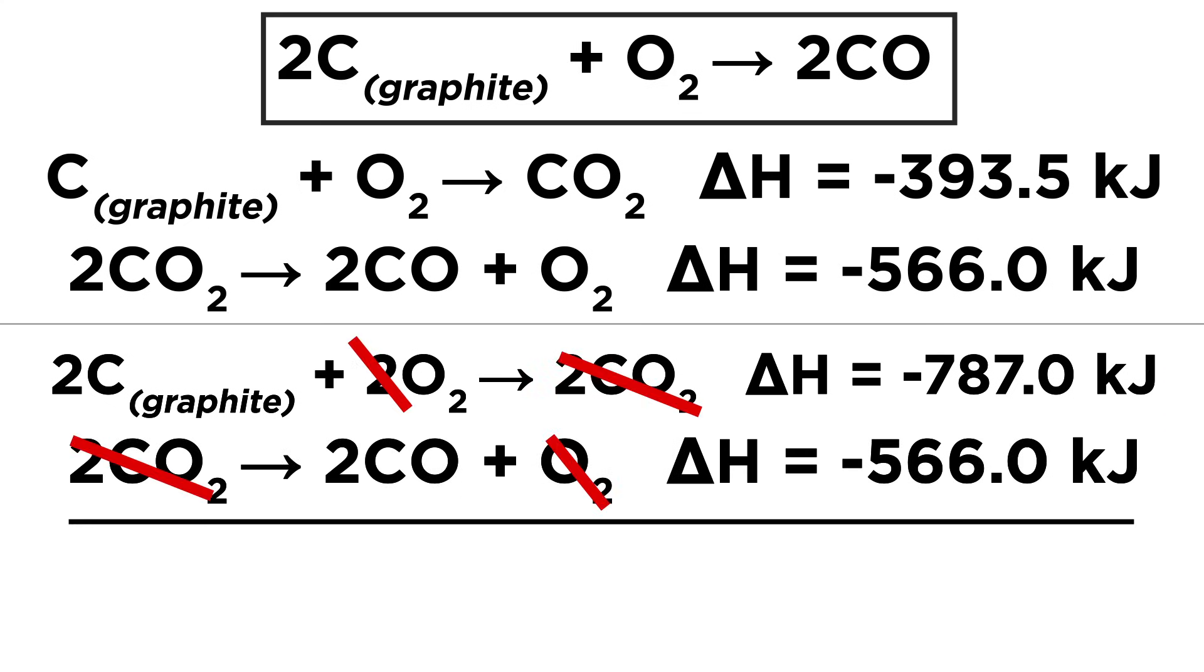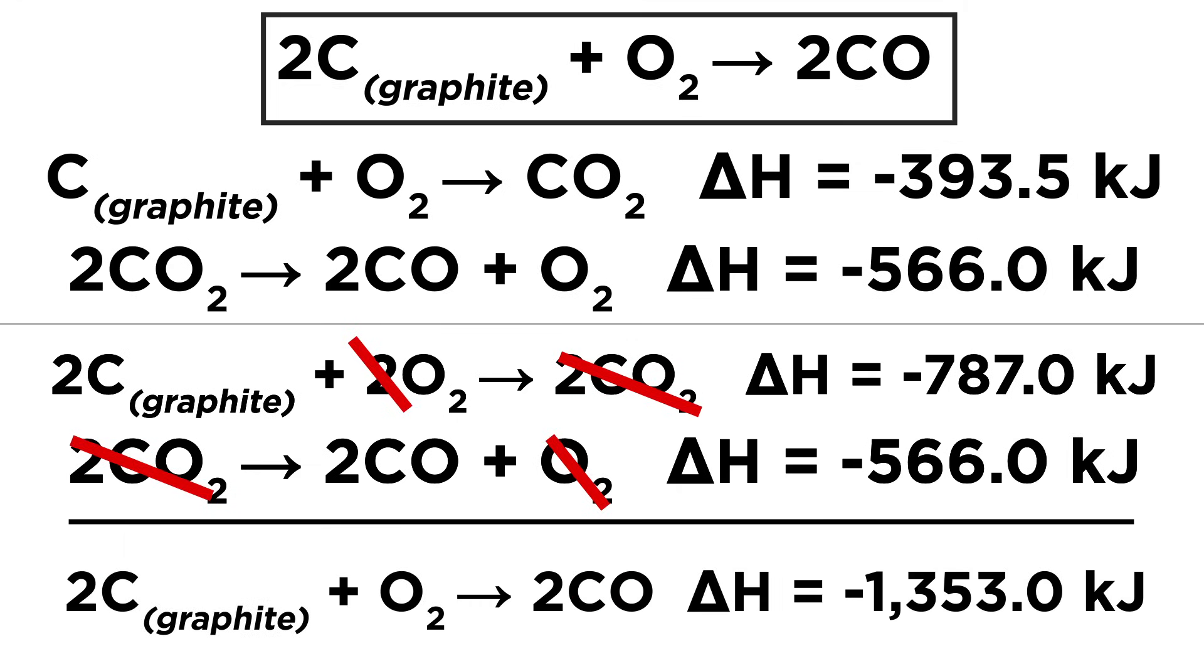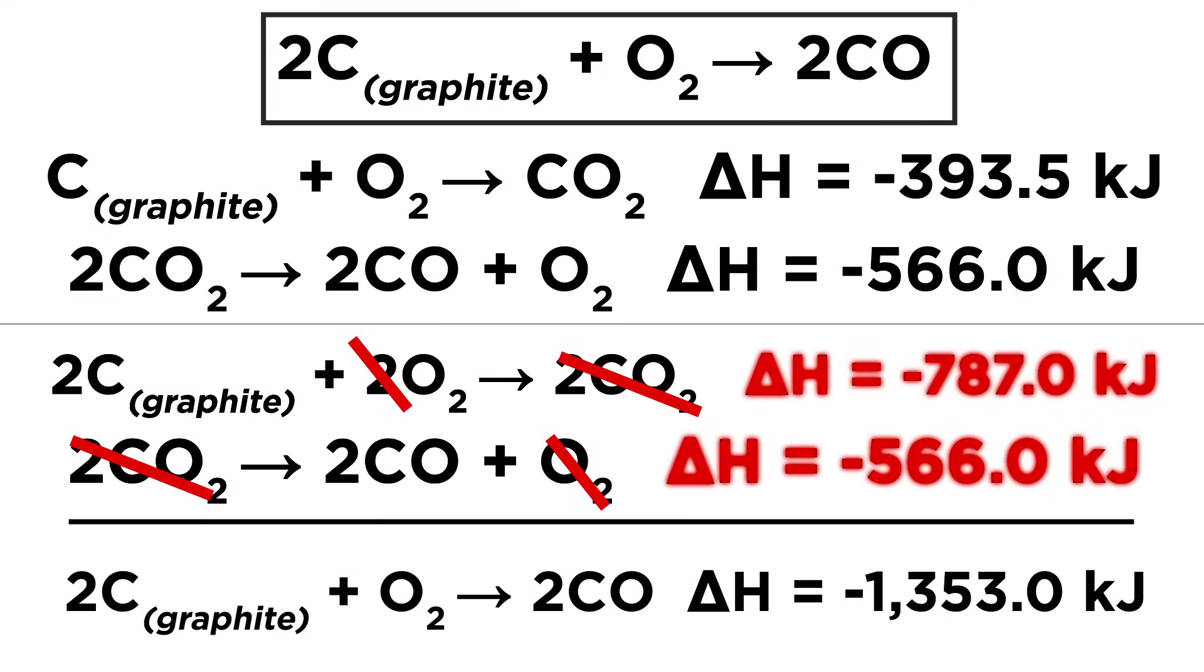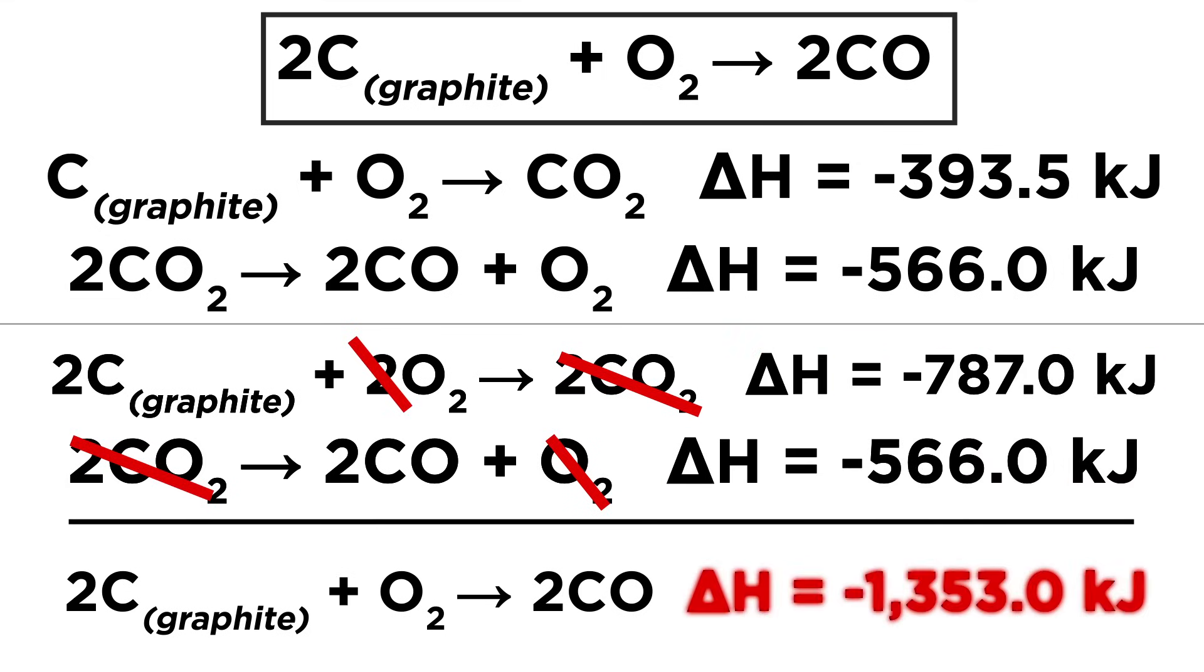The O2 and CO2 will cancel because they are present in the same amounts on both sides, and we are left with the substances in our original equation. Since we added the equations, we also add the delta H's to get the delta H for our equation.